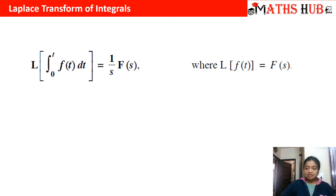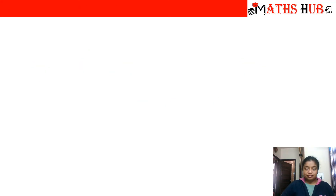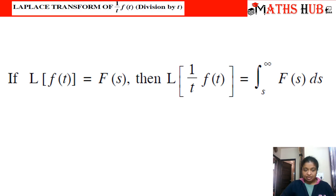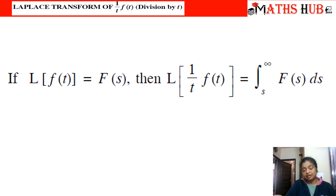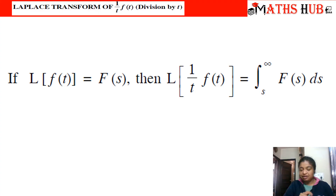The next formula is for the Laplace transform for division by t. If the Laplace of f(t) equals F(s), then the Laplace of (1/t)·f(t) is the integral from s to infinity of F(s) ds. It is very interesting: if we have division on the left side it becomes an integral on the right hand side, and if we have an integral on the left hand side it becomes a division on the right hand side — only the parameters change. On the left side we deal with a function in t, and on the right side it is a function in s.